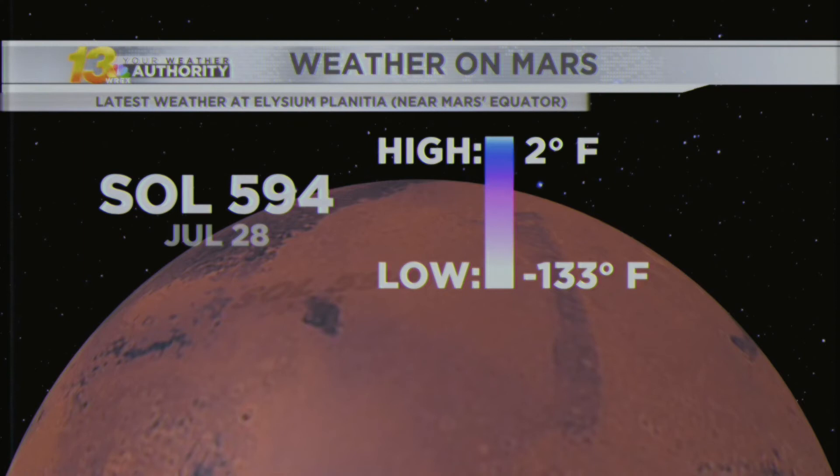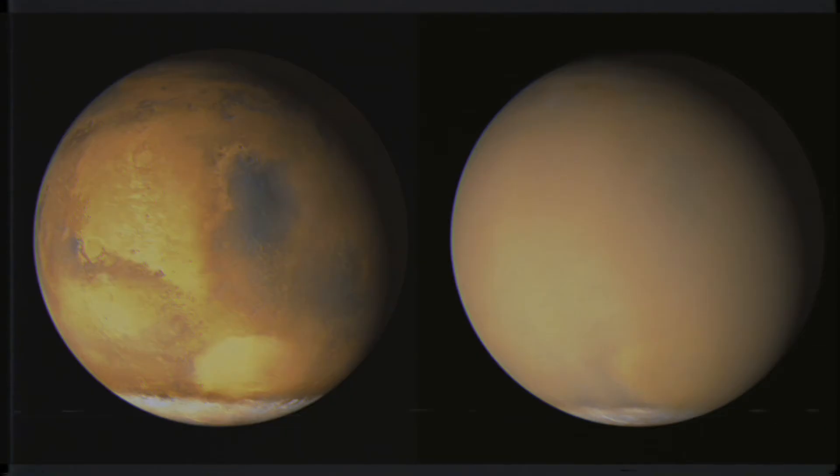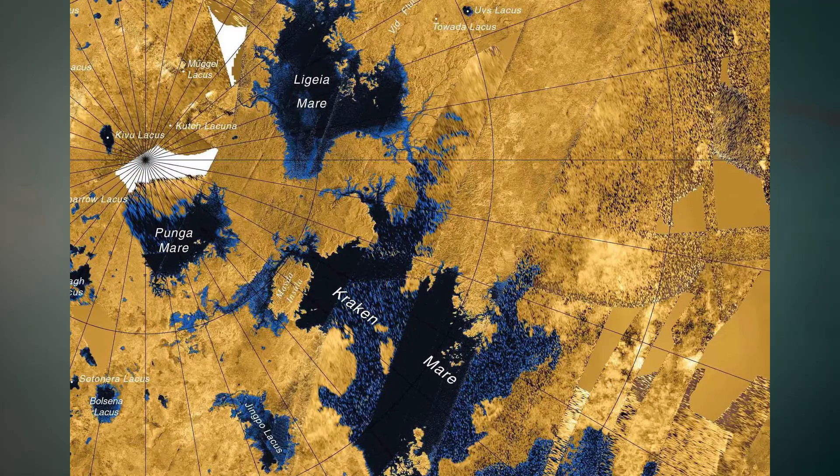Which brings up the question: do other planets experience weather? Yes, but a different type of weather than we experience on our own planet. For example, the thin atmosphere on Mars, coupled with the large temperature difference between day and night, can cause solar dust storms that envelop parts of the planet's surface, as well as the occasional dust devil. Saturn's moon Titan has an axis and experiences seasons much like Earth. Because it's so far from the sun, instead of a water cycle it has a methane cycle, where methane evaporates in the summer and falls as liquid methane in the winter, pooling into lakes near the poles.